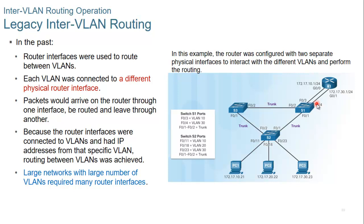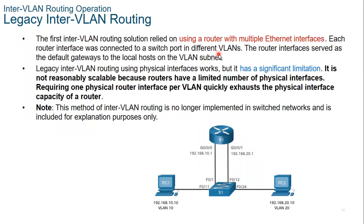Large networks with a large number of VLANs require many router interfaces, and routers don't have that many interfaces. The first inter-VLAN routing solution relied on using a router with multiple Ethernet interfaces. Each router interface was connected to a switch port in different VLANs, and the router interfaces served as the default gateways to the local hosts. Legacy inter-VLAN routing using physical interfaces works, but it has a significant limitation — it is not reasonably scalable because routers have a limited number of physical interfaces. Requiring one physical router interface per VLAN quickly exhausts the physical interface capacity of a router.